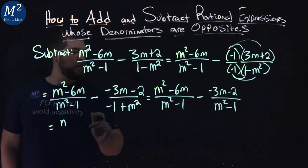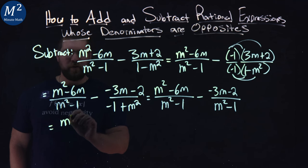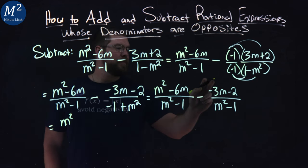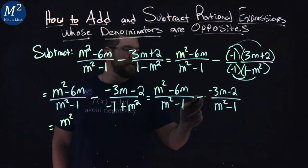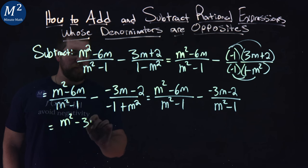Let's go subtract the numerators. m squared is by itself, so I don't have to erase anything. m squared, nothing over here. We have minus 6m minus negative 3m, which is plus positive 3m, so that becomes minus 3m.